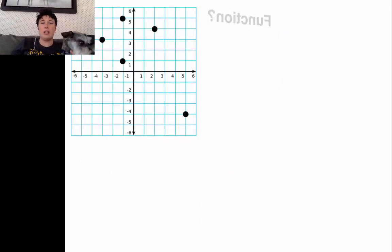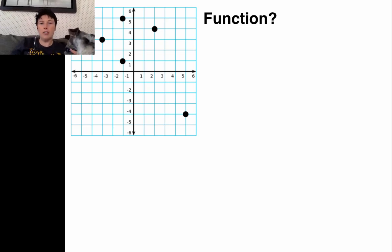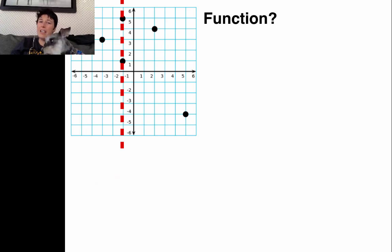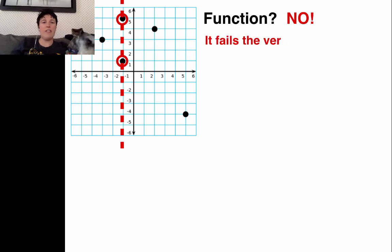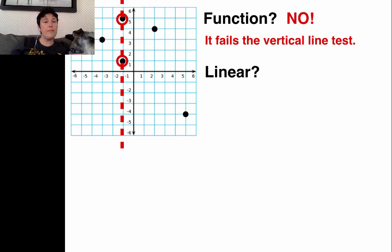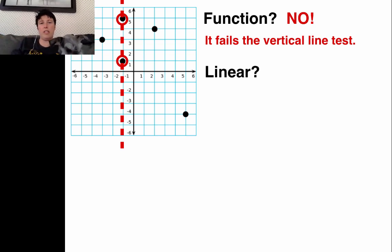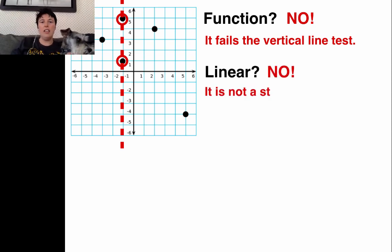Now let's ask the questions. Is it a function? Vertical line test — if I draw a vertical line, it hits two spots. This one fails, so it's not a function. Is it linear? Do the points look like a straight line — can you put your ruler through all of them? No, you can't. So definitely not linear; it is not a straight line.